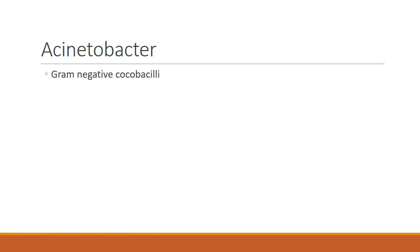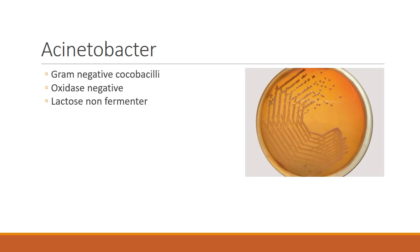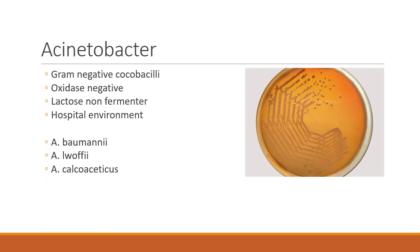Finally, Acinetobacter. Acinetobacter is a gram-negative coccobacillus, oxidase negative, and lactose non-fermenting, showing pale colonies on MacConkey agar. It is a saprophytic bacillus present in the hospital environment. There are three important species: Acinetobacter baumannii, Acinetobacter lwoffii, and Acinetobacter calcoaceticus. Among these, Acinetobacter baumannii is very important because it can cause hospital-acquired infections, while Acinetobacter lwoffii can cause community-acquired infections. This concludes part one of miscellaneous gram-negative bacteria.